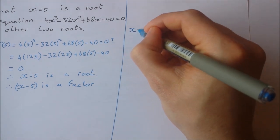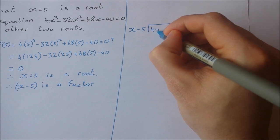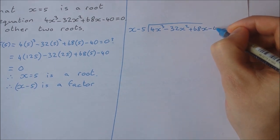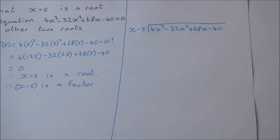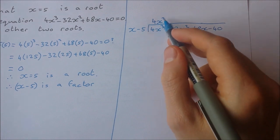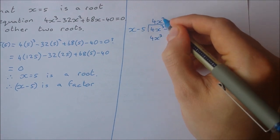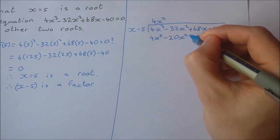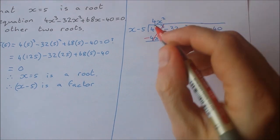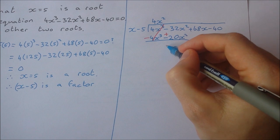I'm going to divide x minus 5 into 4x cubed minus 32x squared plus 68x minus 40. If you need to revise long division in algebra, I have a video on my channel for that. x into 4x cubed is 4x squared. Multiply down: 4x squared by x is 4x cubed, 4x squared by minus 5 is minus 20x squared. Subtracting — change the signs — they cancel, and minus 32 plus 20 gives minus 12x squared.